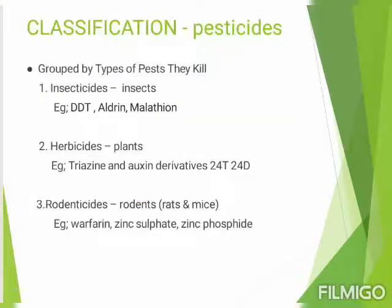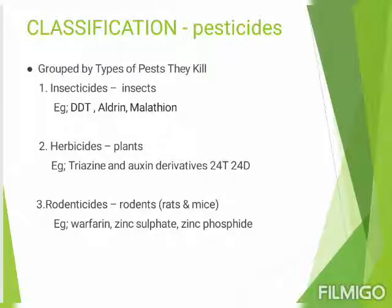Pesticides can be classified in many ways due to their wide variety of usage, but one of the main aspects is by the types of pests they kill. The first and main type is insecticides. As the name suggests, these pesticides are used to kill insects — for example, DDT, aldrin, and malathion.